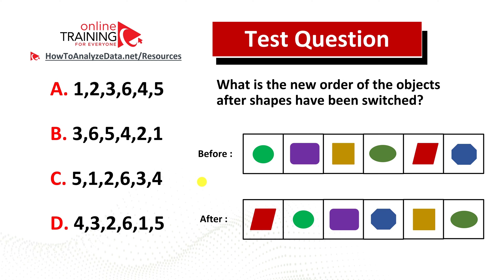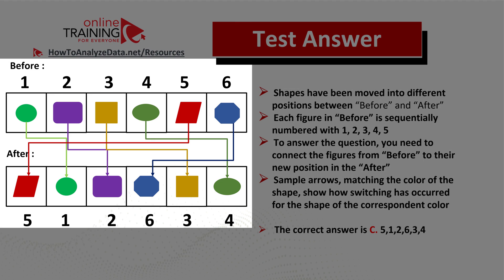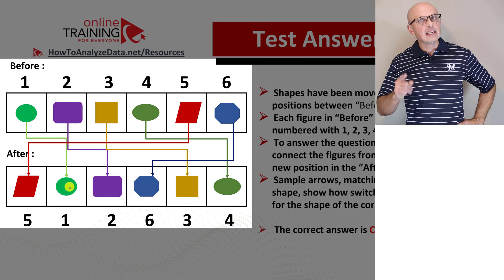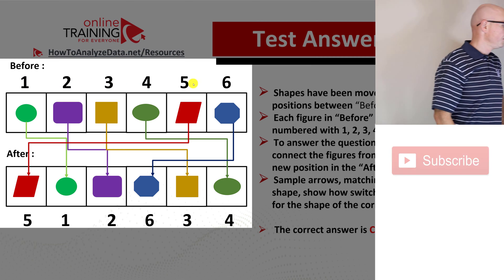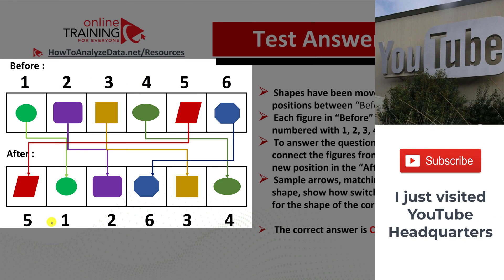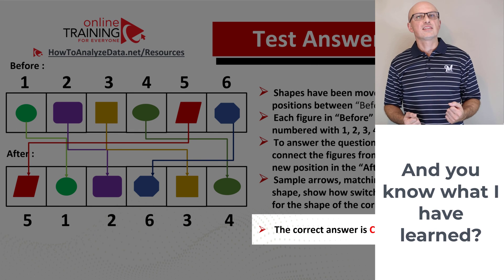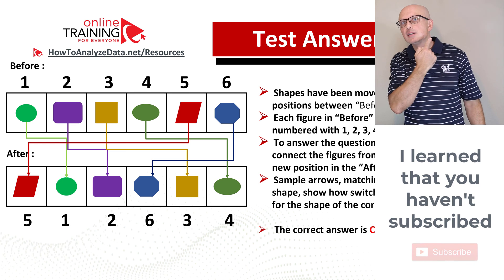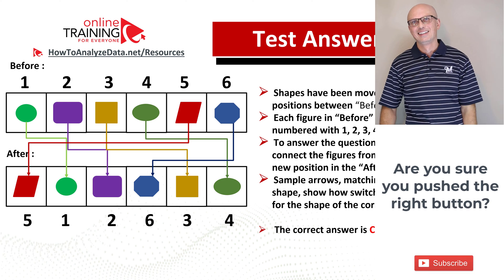The best way to solve this challenge is to trace each object from its old position to the new position. For example, the green oval was in position one before and is now in position two. If you trace all the objects, you'll find that the previous positions were one two three four five six and the new positions are five one two six three four. So the correct answer is choice C: five one two six three four. You have about 30 seconds to complete it, so the more you practice, the better you become.